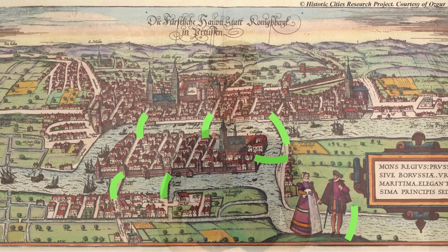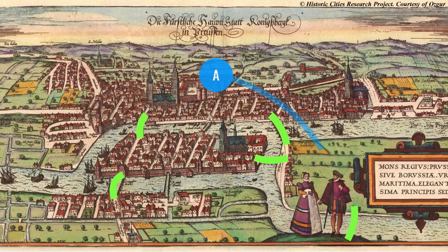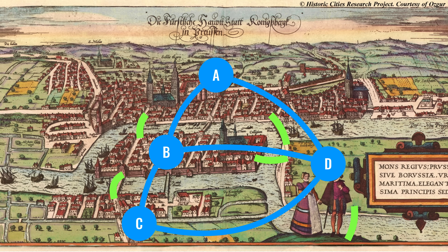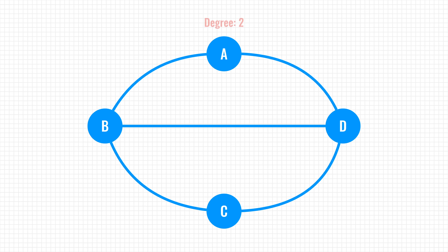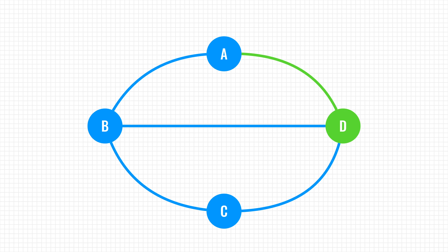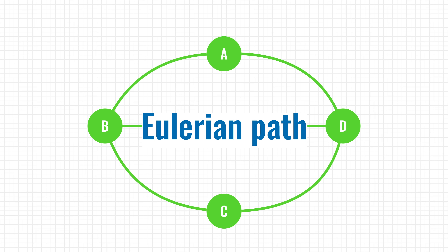Kind of a bummer that we can't solve the Königsberg problem. However, since Euler's paper, the city has changed substantially. During a bombing in World War II, two of the seven bridges were destroyed, and later, two others were demolished. An updated graph representation would now look like this. Two of the nodes now have a degree of 2, while the remaining nodes have a degree of 3. That means that we can now walk across all of the bridges without crossing the same bridge twice — that is, if we begin on one island and end on the other.